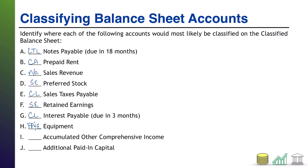Next up: accumulated other comprehensive income. This is one of those cases where various changes in value that can't go on the income statement yet get collected. That value change affects the net worth of the company, and therefore it is captured in the shareholders' equity section of the balance sheet. You often see this abbreviated AOCI.